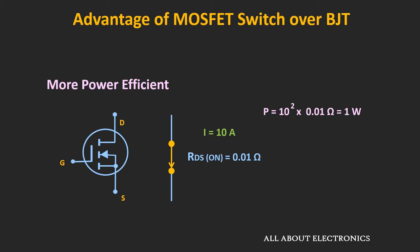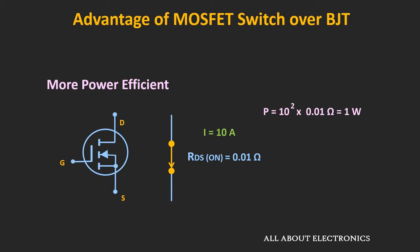When the BJT and MOSFET are used as a switch, there are two types of losses: conduction loss and switching loss. The conduction loss occurs whenever the switch is in the ON condition. When the MOSFET and BJT are used in continuous switching applications, switching loss is a very crucial factor. For the MOSFET, this switching loss is lower compared to the BJT. So at high frequencies in continuous switching applications, the MOSFET is more preferred over the BJT.